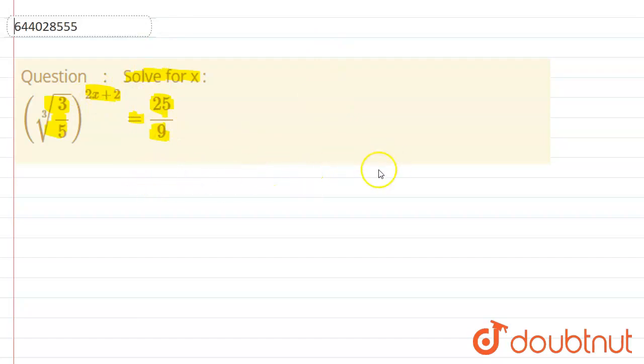Here I'm going to apply a property: (a^m)^n equals a^(mn). So let's apply this property here and see what we get.